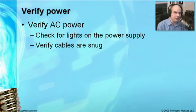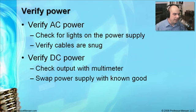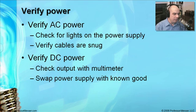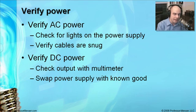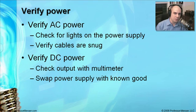Check for indicator lights — many power bricks that come with laptops have power lights so you can see if they're getting power from the wall. Make sure cables are snug since they're designed to connect and disconnect easily for transportation. For the DC power side coming out of your power brick, there's no indicator light, so you may need to check it with a multimeter. You can also swap in a known-good power supply, since surges and lightning strikes can fry them easily.